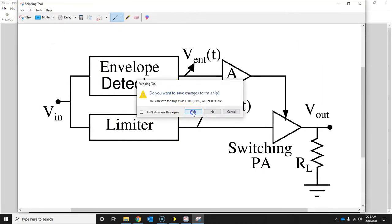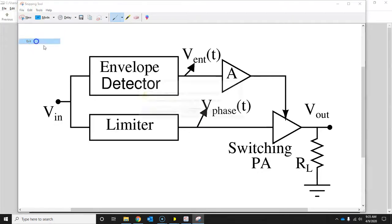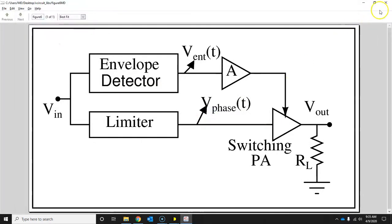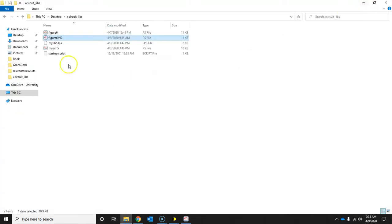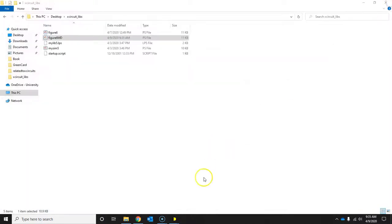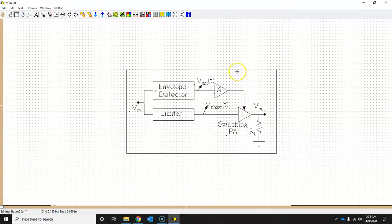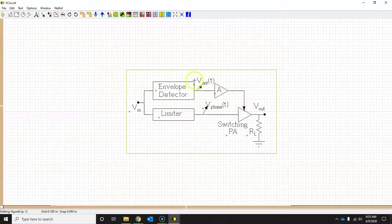But sometimes, especially some Unix and Linux users, they want the output to be in native PS format, the PostScript format, and they also don't want to see this boundary. So how to get rid of that boundary? So to do that, go here,